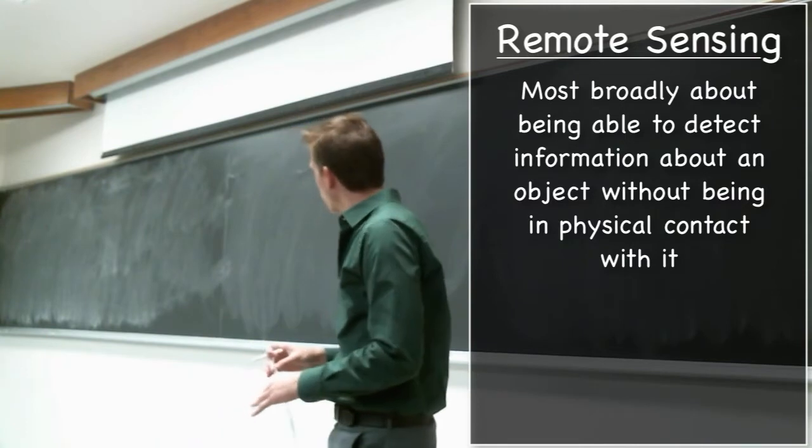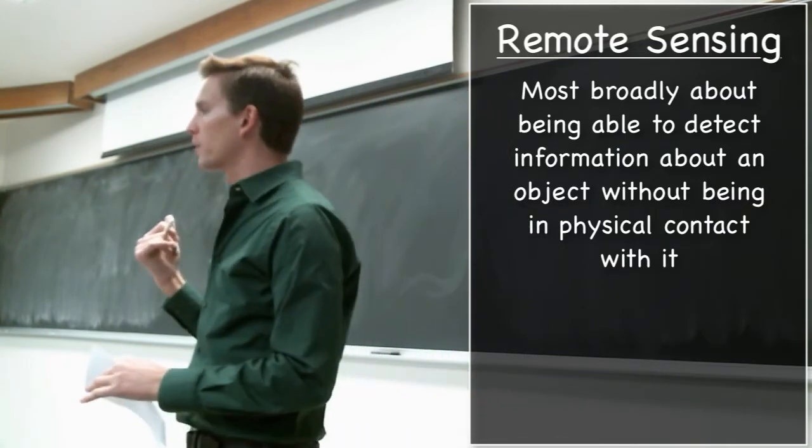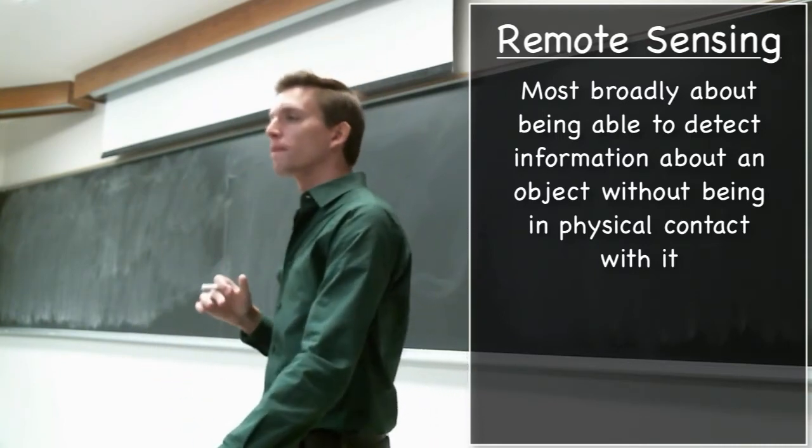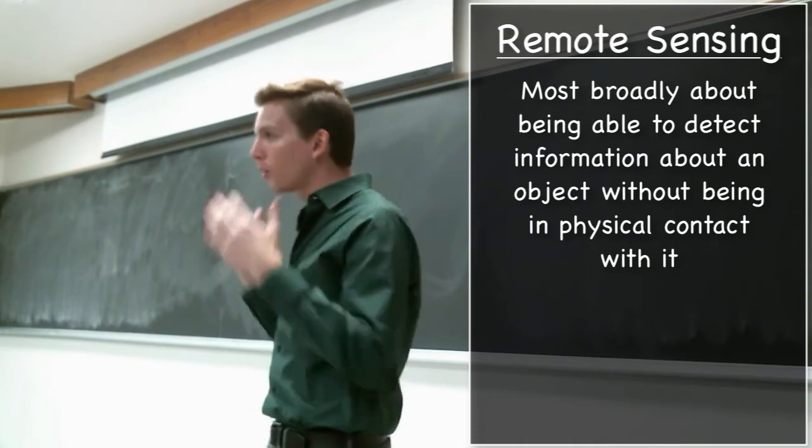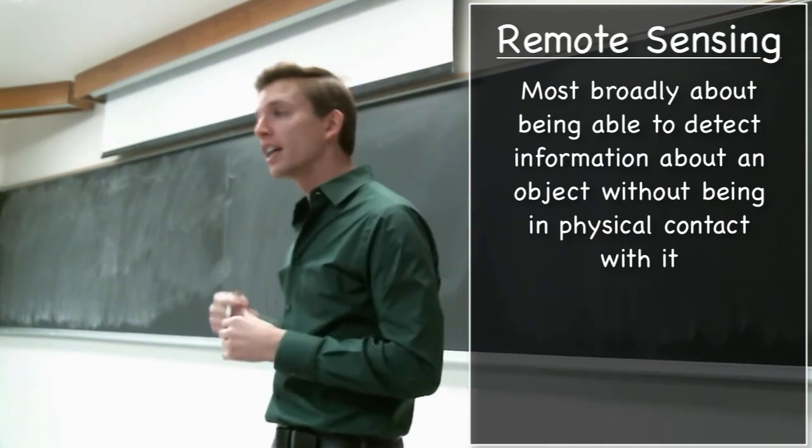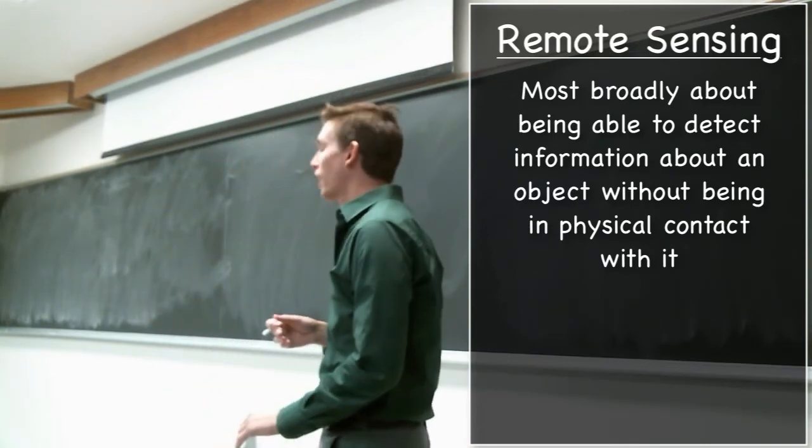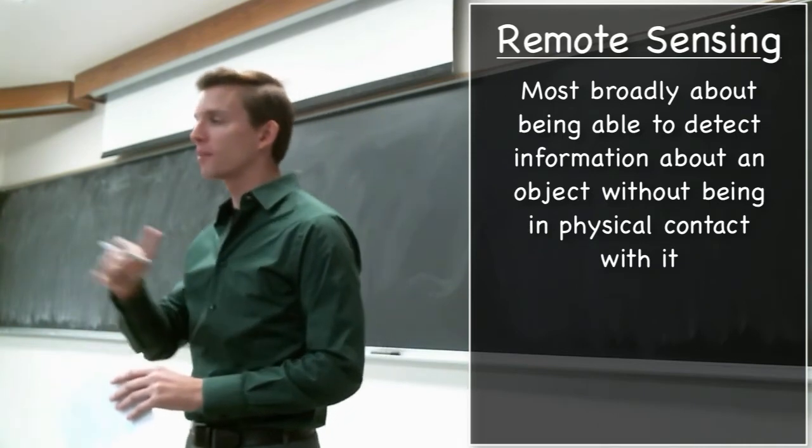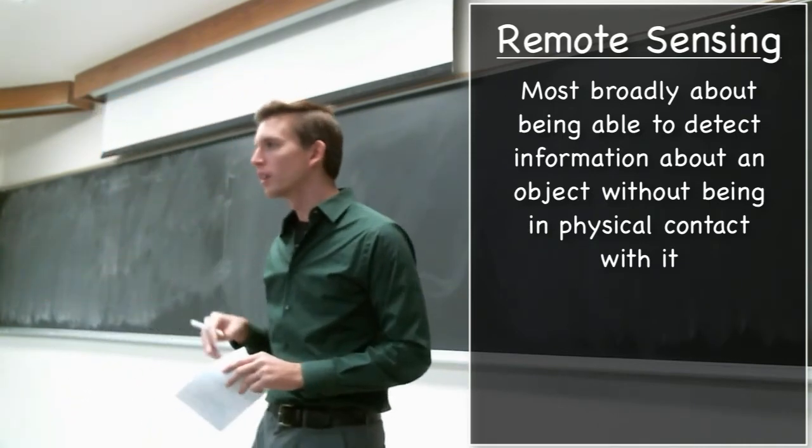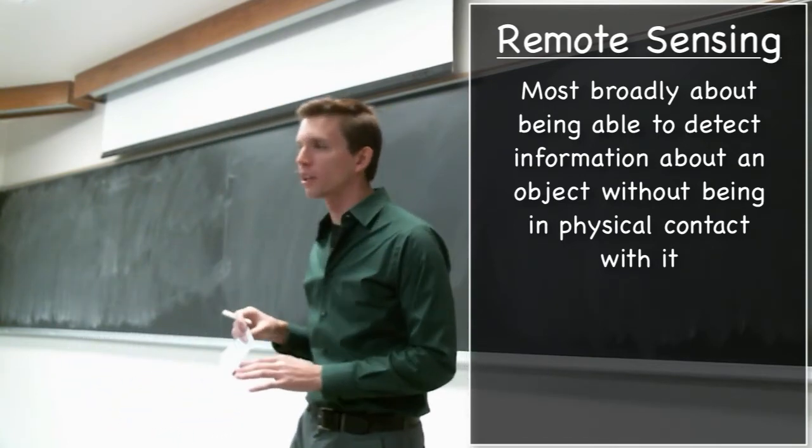In the general sense, then, if you have some kind of system that allows you to collect information about something that you do not have to come into contact with that object, then you're doing remote sensing. In this sense, our eyeballs, our vision system that we have biologically, is a remote sensing system that we depend on quite a bit. We're able to detect and determine all kinds of information about our environment without having to go and touch everything.